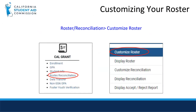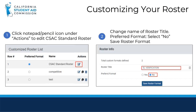To begin customizing your roster, click Roster/Reconciliation under the Cal Grant section on the home page. Then click Customize Roster from the pop-up menu. All customized rosters that you create begin with the CSAC Standard Roster. Click on that notepad pencil icon under the Actions column header.